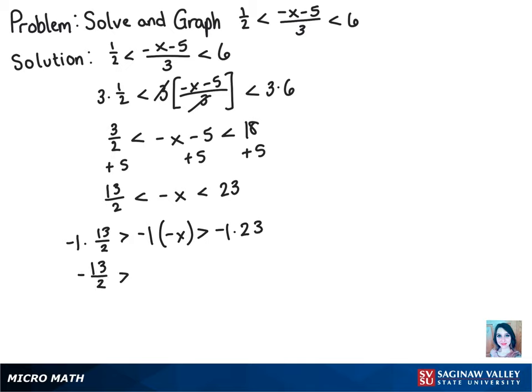Now we have negative 13/2 is greater than x is greater than negative 23. And just to make it easier to read, I like to flip it around so the smallest number goes first. So I have negative 23 is less than x is less than negative 13/2.